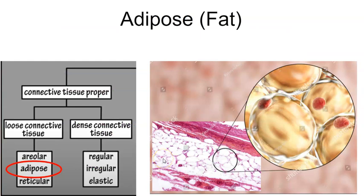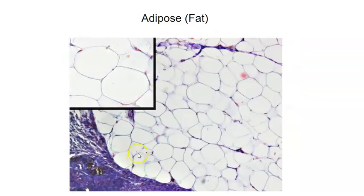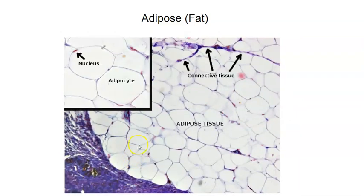Adipose tissue, or fat. These are just fat cells — there's the nucleus. Under the microscope, you don't really see the fat itself because in the process of preparing the slide, the fat gets washed out. But these are the adipocytes, the fat cells, and you can see their nuclei. In a zoomed image, there's the nucleus and all that space is where the fat was.